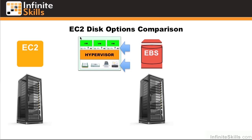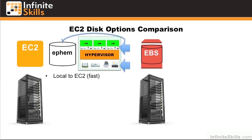When we talk about ephemeral or instance store, we're talking about that disk. Let's look at some of the properties of ephemeral. First of all, it's local to EC2, so it's very, very fast. The size is static, and it's set by the instance type.